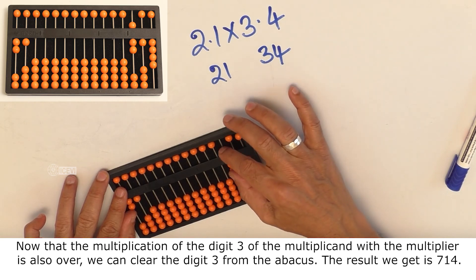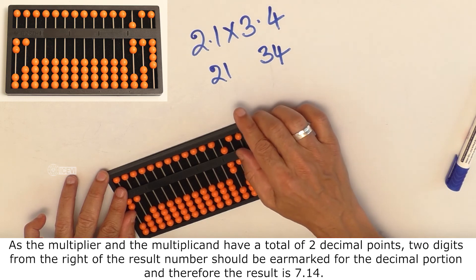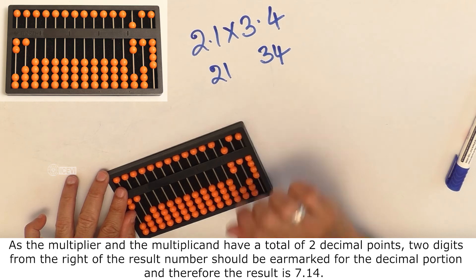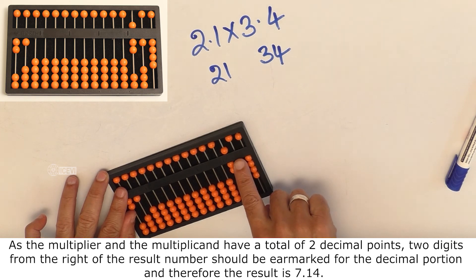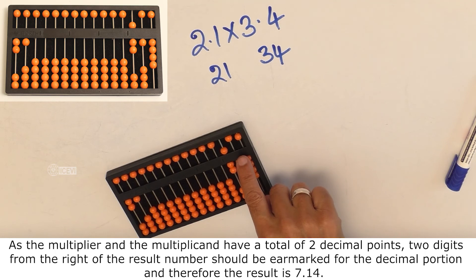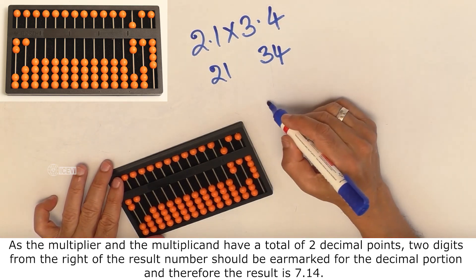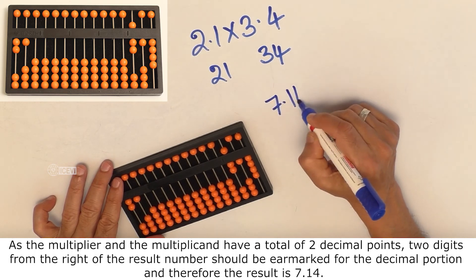The result we get is 714. As the multiplier and multiplicand have a total of 2 decimal digits, 2 digits from the right of the result should be earmarked for the decimal portion. Therefore, the result we get is 7.14.